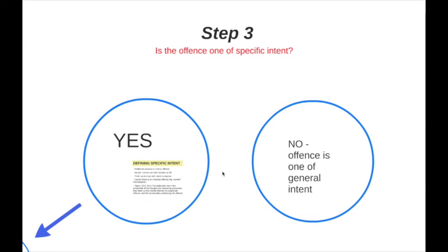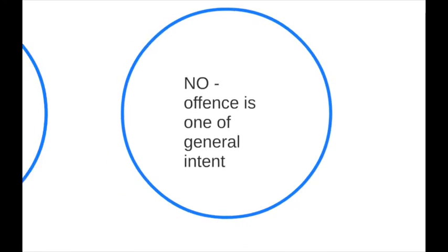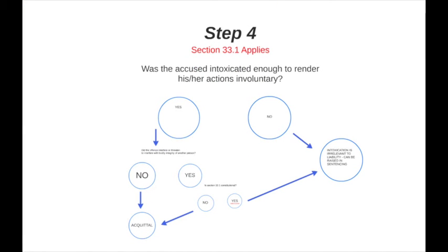What if the offense is one of general intent? That's where we get into the area of extreme intoxication. Extreme intoxication came to the forefront in the Supreme Court of Canada case of Daviault. Until 1994, there was no step four — it didn't exist. After 1994, the Supreme Court decided in Daviault that extreme intoxication amounting to involuntariness is a defense. Unfortunately — or fortunately, depending on your perspective — that was followed by section 33.1 of the Criminal Code, which makes the whole thing more complex.